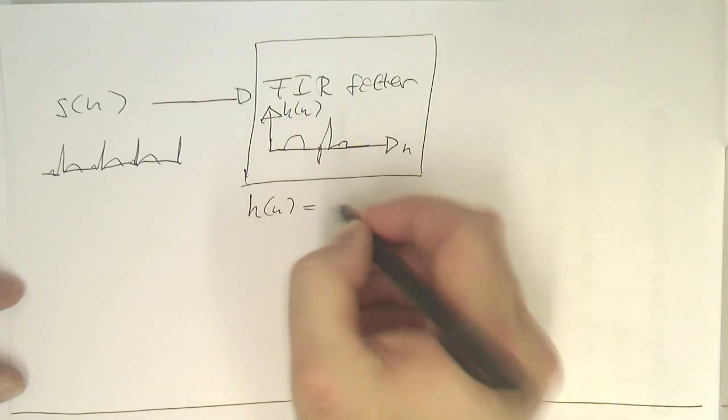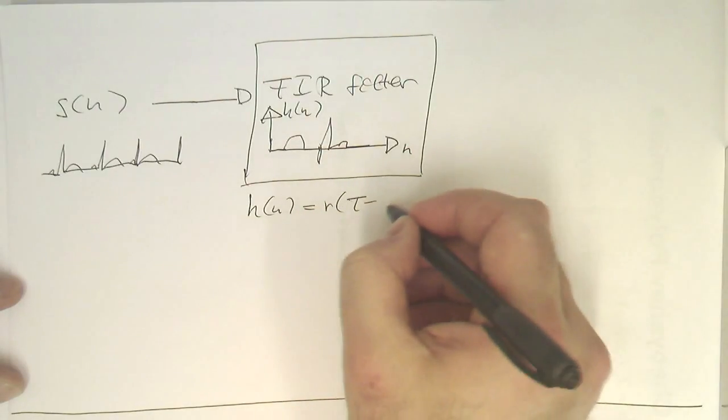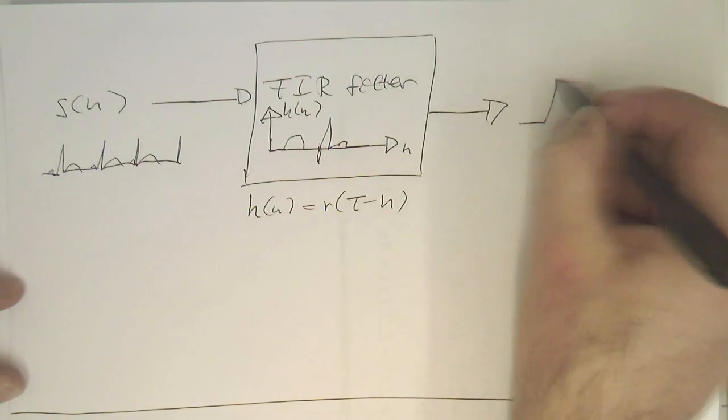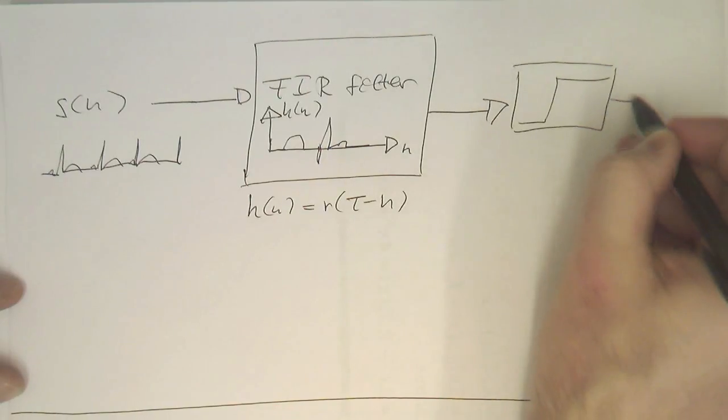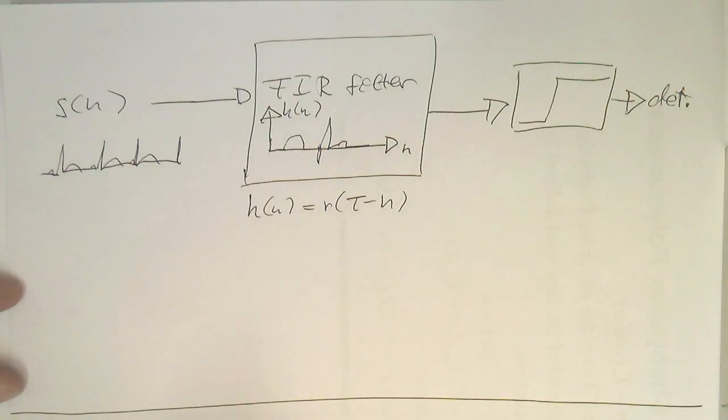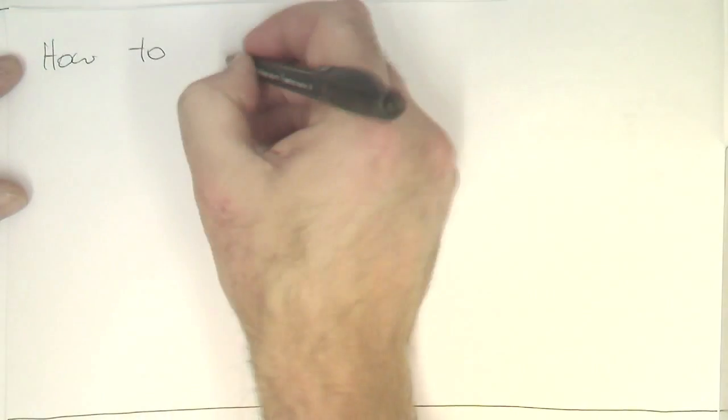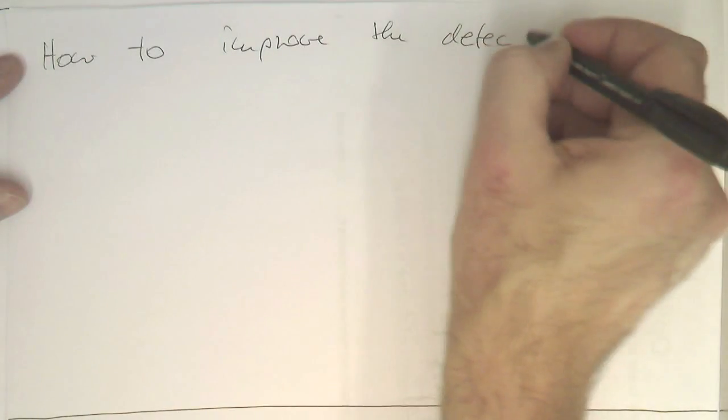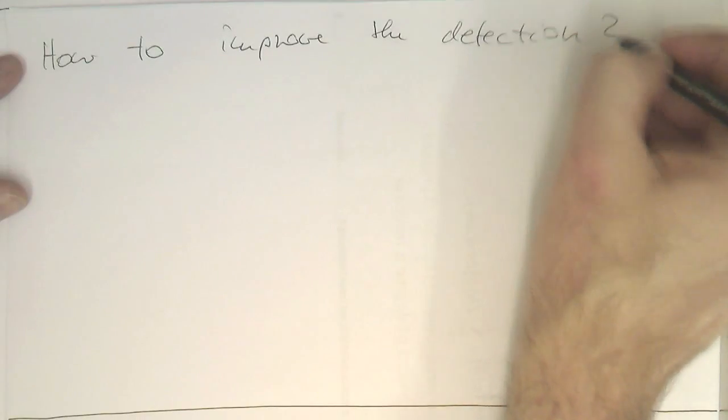So, H of N is just R T minus N. And then after that, we just need to employ a threshold. And then we have got here our detection. So, the question is now, how can we improve our detections? So, how to improve the detection?